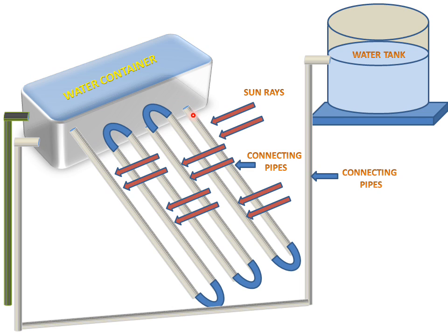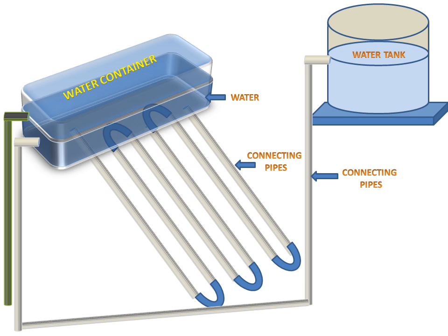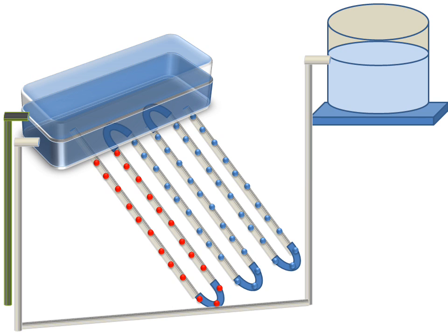Cooling water will come through this container. This water will come in, and after taking heat it will be converted into heated water. The red points shown indicate where heat exchange takes place, and these red dots are created by the heat exchanging. The water will then come to the container.